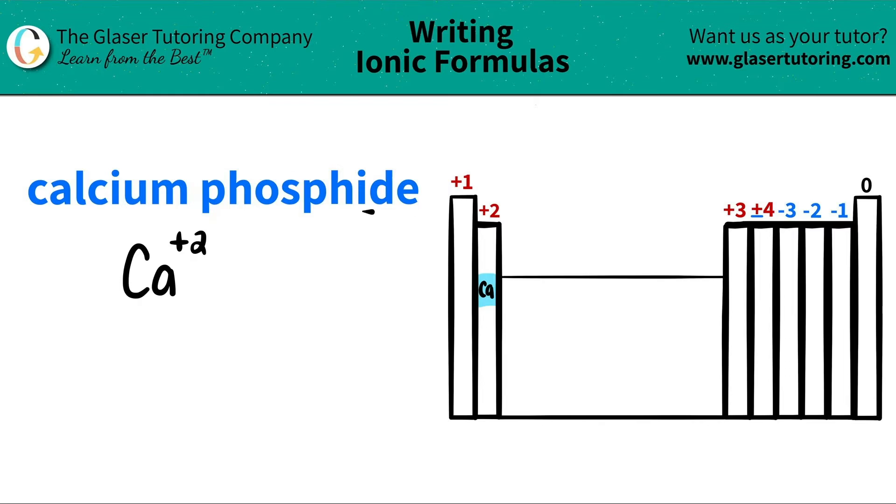Now comes phosphide. I see that I have an IDE ending which means that it's probably going to be a non-metal on the periodic table. So I look for something that starts with Phos, and I find it right here. This is phosphorus.